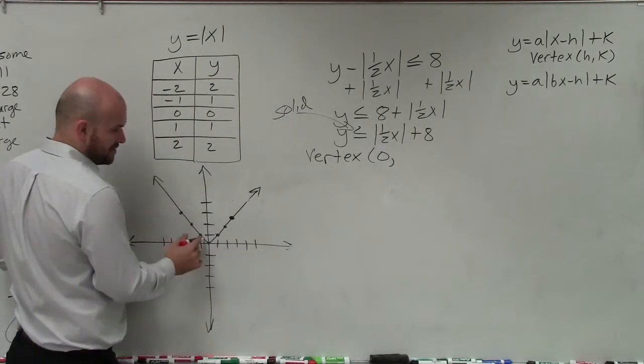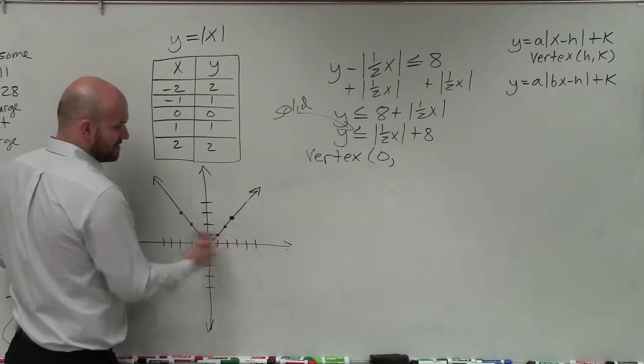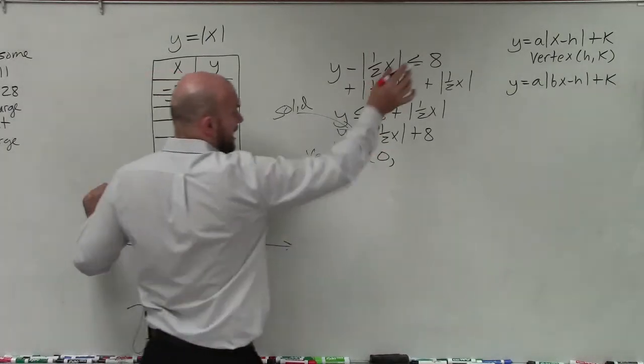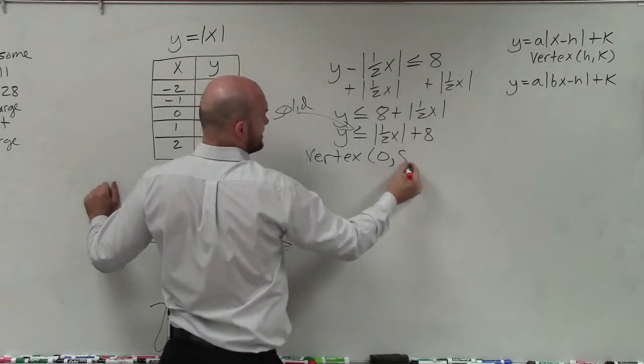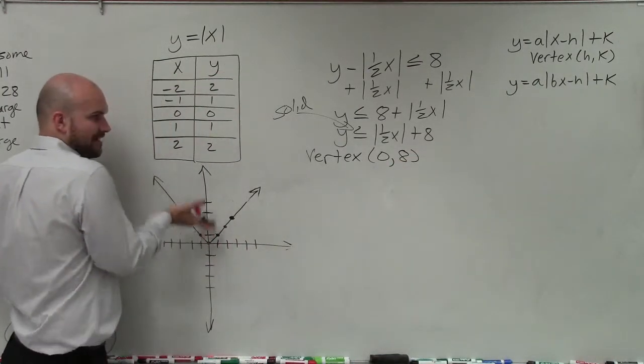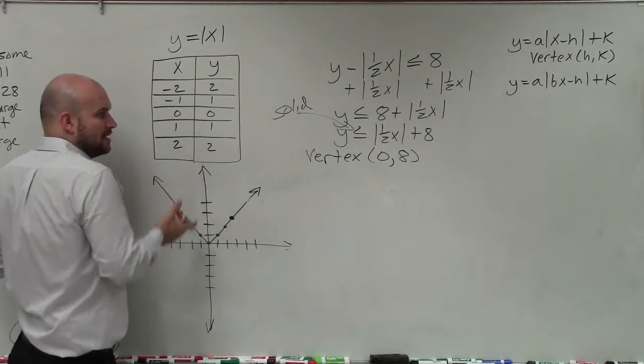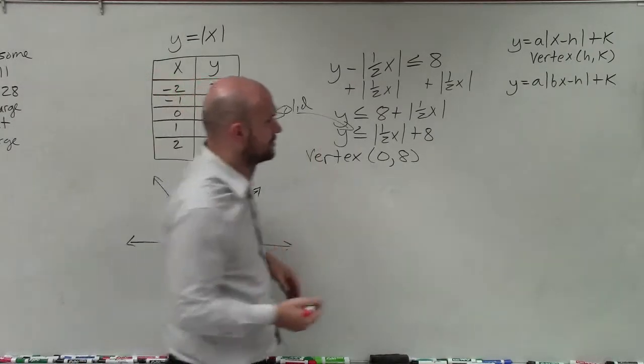This vertex is at 0,0. So if the x-coordinate is 0, that means I'm not moving left or right. But now, since I'm adding 8 outside my absolute value, that tells me I'm going to be shifting my graph up 8 units. So now my vertex is 0,8.